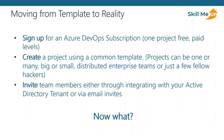To move from a Scrum or Agile template to a project reality: you sign up for an Azure DevOps subscription — one to five projects is free, with paid enterprise levels offering additional functionality. On the freemium side, you get pretty much everything you can do with Azure DevOps at a smaller scale. You create a project using one of the common templates. Projects can be one or many, big or small, distributed enterprise teams, or just a few hackers. Then you invite team members, either by integrating with an Active Directory tenant directly or through email invites as guests.